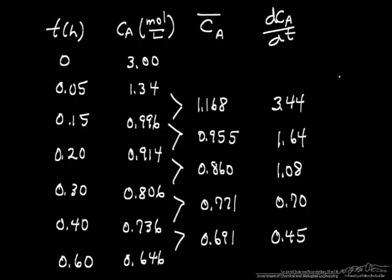we show you first, if we look at these two data points we can calculate an average concentration, namely the sum of these two divided by two, and that average concentration then corresponds to this rate,